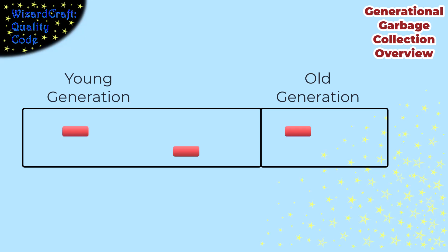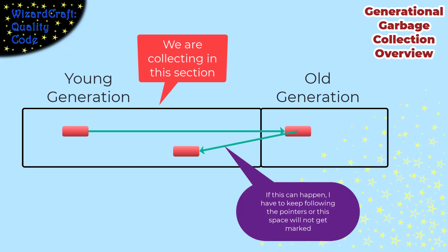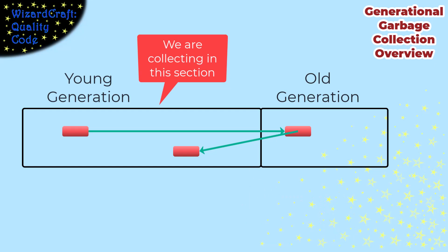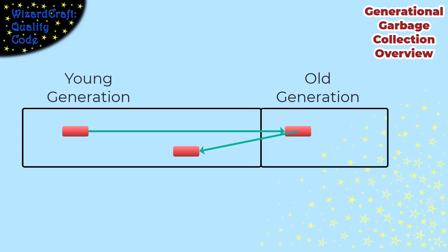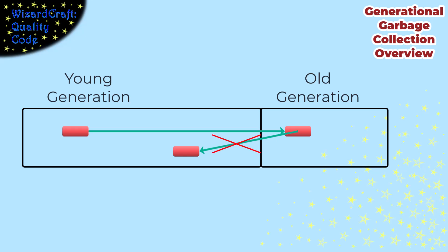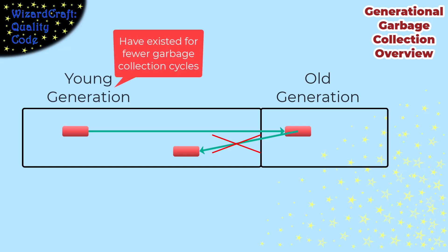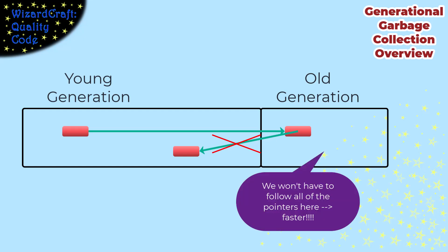One concern is what happens when we cross generations. If a short-term GC finds a reference into the long-term area, do we need to keep following those pointers? In a mutable language like Java or C++, we have to keep looking because a long-term object may have been modified to point at something still in the short-term area. However, in a functional language like Haskell where objects cannot be modified after creation, once something is in the long-term section it cannot point at short-term objects, since all short-term objects were created after the long-term ones. This means short-term GC can stop following pointers when it reaches the long-term area, making garbage collection much faster in functional languages.